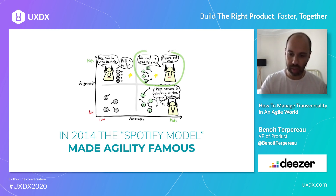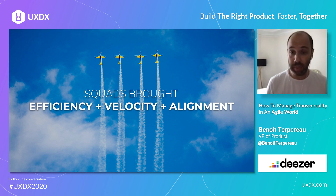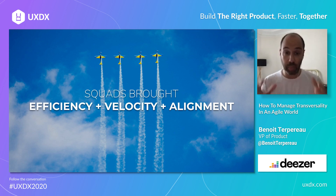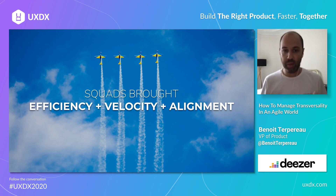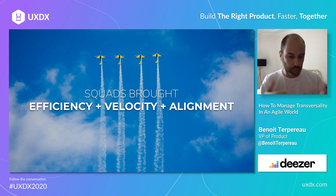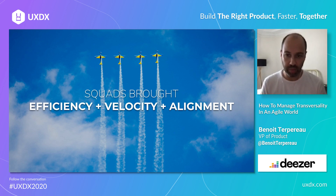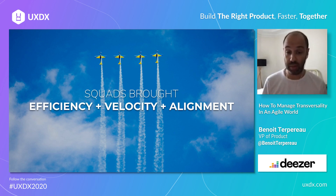So what does it mean concretely? One element we pretty much all adopted is the concept of squads. We now regroup all the relevant people to implement a digital product in a single team — with PMs, devs, QA, design, sometimes PMM as well. And it brought a lot of good things in tech. We are much more efficient as all the people you need are with you on a daily basis. It is quicker to implement features that way — teams are much more aligned, especially if you plug in an alignment framework like OKRs.